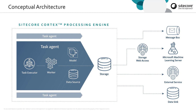The Cortex processing engine also uses the message bus, which is the same message bus that already exists inside XConnect. This is used for sending messages around the different SciCore roles — messages for reporting on task status, for example when a task changes from processing to completed. We also use the message bus to communicate to the engine from outside, for example scheduling tasks from the XM server to run inside the engine.